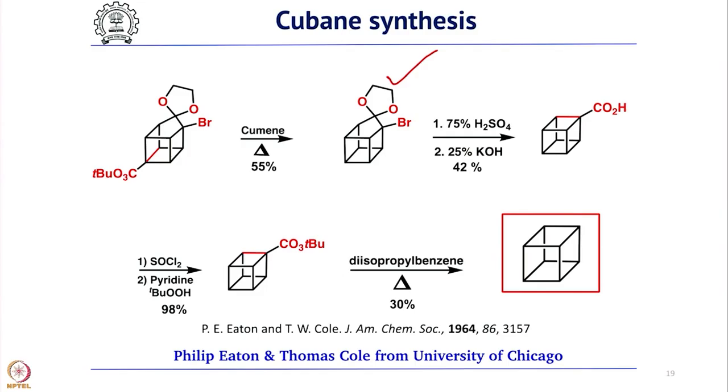This is one of the classical syntheses of a non-natural product called Cubane, reported by Philip Eaton and Thomas Cole from the University of Chicago in 1964. Afterwards, several derivatives of Cubane were synthesized and used, and army researchers were particularly interested in several derivatives. To summarize: today we briefly covered 2+2 cycloaddition under photochemical conditions, performed a proper retrosynthesis for Cubane, and using quasi-Favorsky rearrangement and 2+2 cycloaddition, successfully constructed all 6 four-membered rings of Cubane, completing its total synthesis.